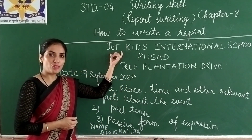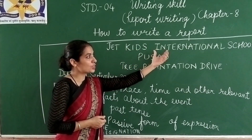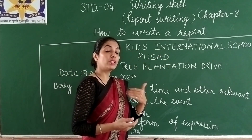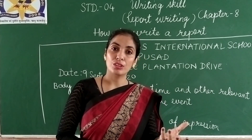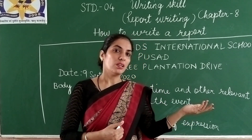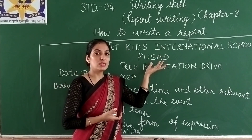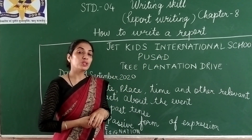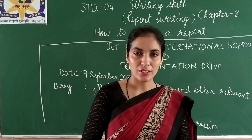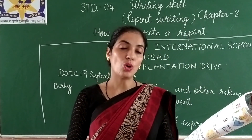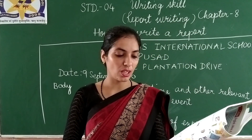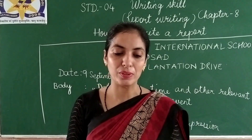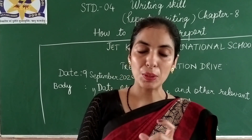The first part is the name of the school — for example, Jet Kids International School. If it is already given in the heading, you take the same name of the institution or whoever is organizing the event. That institution's name should be written. First of all, you should know what the meaning of a report is. A report is a document that presents information in an organized format for a specific audience and purpose. In your book, the report exercise is given.